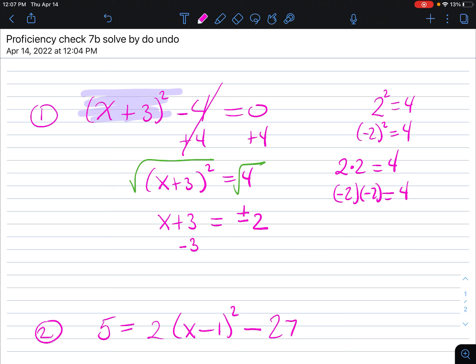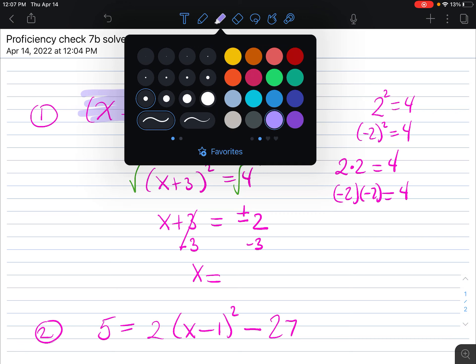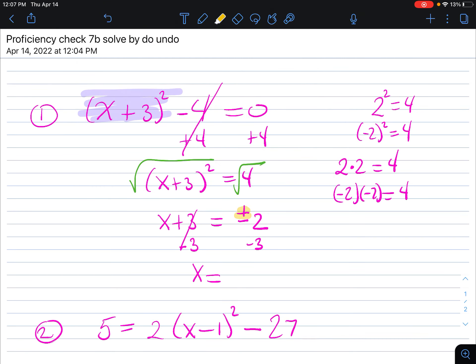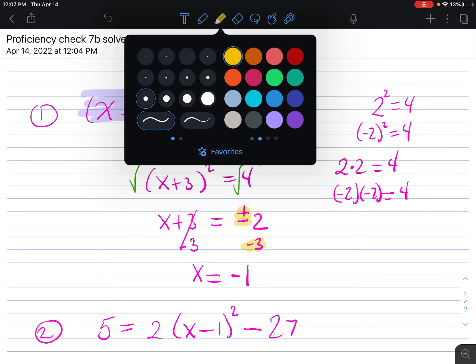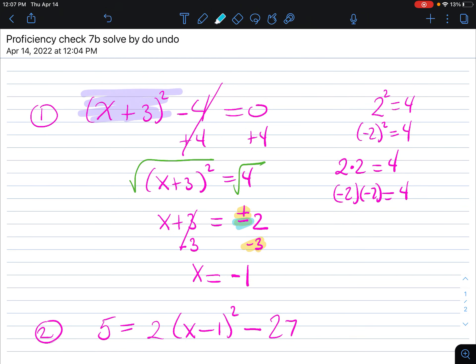We have to undo the plus 3. I subtract 3 from both sides. So you're basically taking the positive 2 and subtracting 3. That gives you a negative 1. And then we're going to take the negative 2 and subtract 3. So negative 2 take away 3 is negative 5. And these are your two solutions.